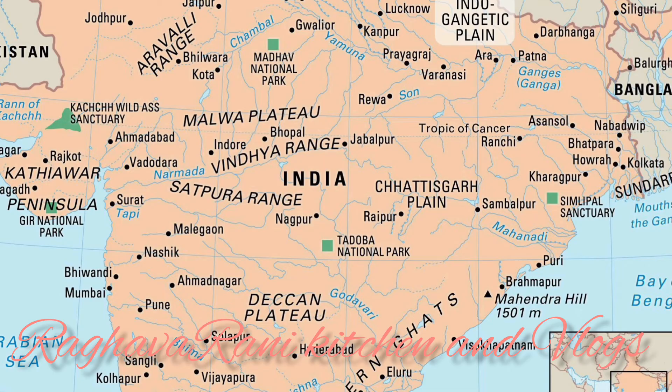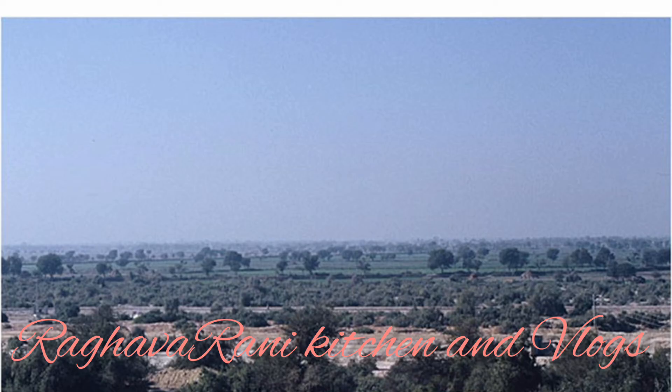The southern part of the Peninsular Plateau is bordered by narrow coastal strips. The west coast starts from the Rann of Kutch and ends at Kanyakumari. It is narrower than the east coast and broken by hilly terrain. It can be divided into three parts: the Konkan coast, the Kanara coast, and the Malabar coast.